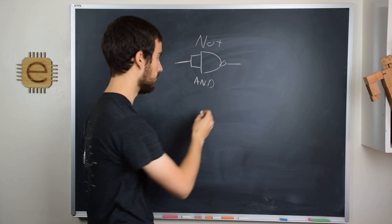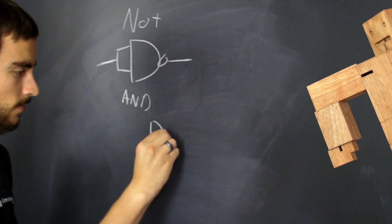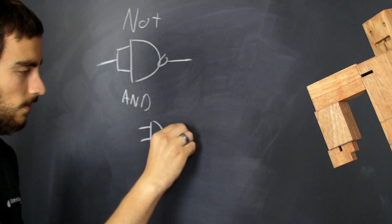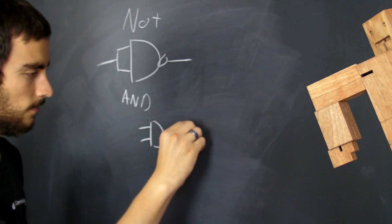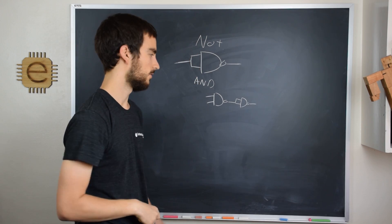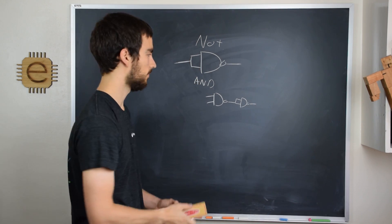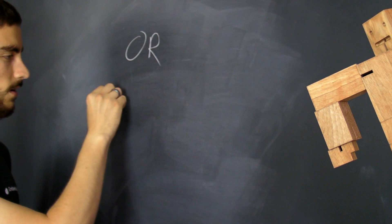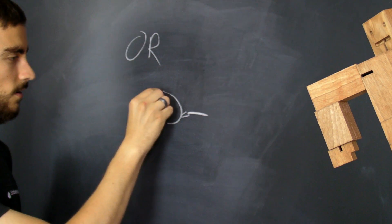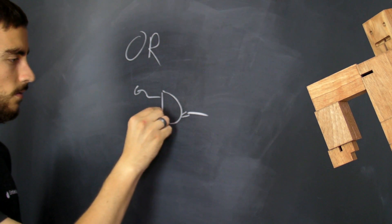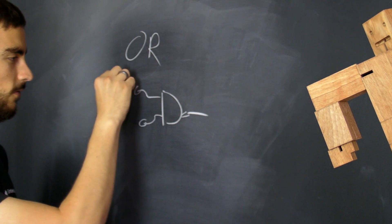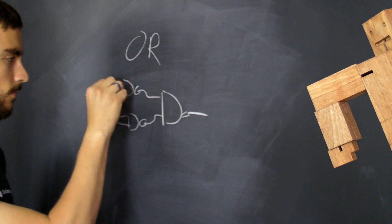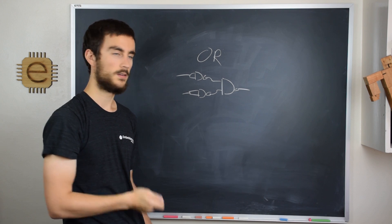To do an AND gate, you simply take a NAND gate and invert the output. So these inverters basically cancel. An OR gate is simply a NAND gate with two inverters on the inputs. And finally,